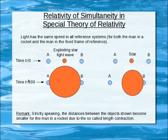And this is at time equals zero. At time equals one hundred, the light of the explosion, of the exploding star, reaches planets A and B at the same time, so simultaneously.